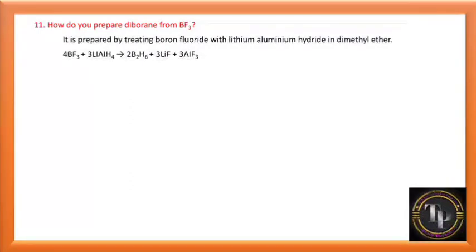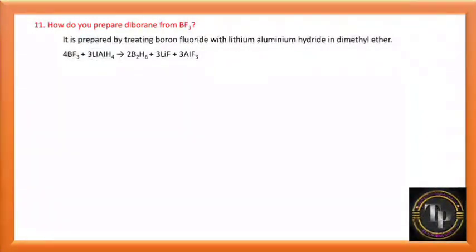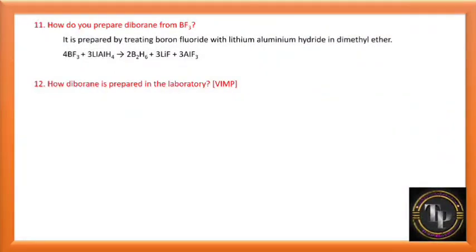How do you prepare diborane from BF3? Boron trifluoride is treated with lithium aluminium hydride (LiAlH4) in dimethyl ether. BF3 + LiAlH4 gives diborane B2H6, lithium fluoride, and aluminium fluoride. This is a very important question in annual examinations.